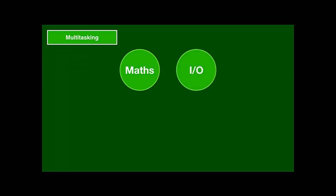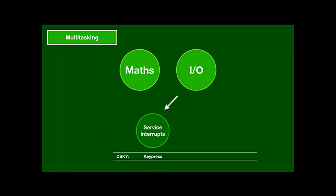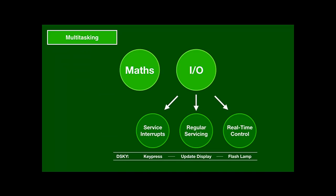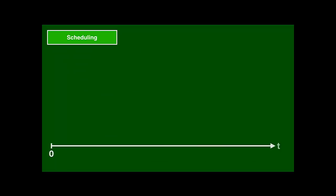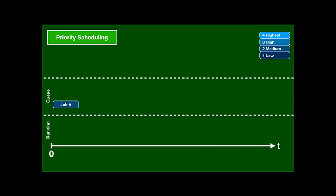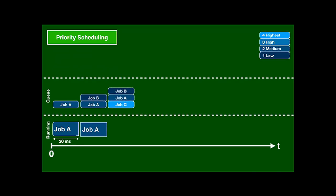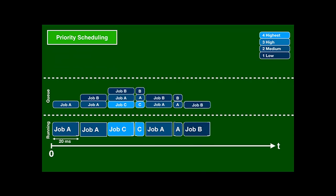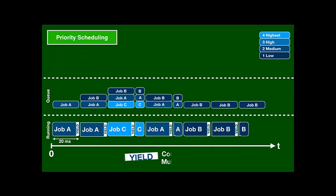The AGC has many things to do: it does mathematical calculations that can take several seconds, it does I/O with its devices, it services interrupts when a device wants the computer's attention, it does regular servicing of devices like updating the display, and it supports real-time control like flashing a lamp or firing boosters at exactly the right time. Since there is only a single CPU, it must switch between different tasks. Jobs have to manually check at least every 20 milliseconds whether there's a higher priority job in the queue by doing a so-called yield, which makes the AGC a priority-scheduled cooperative multitasking computer.